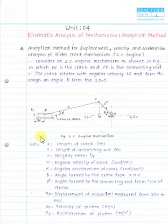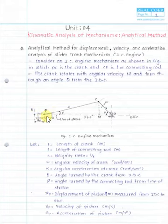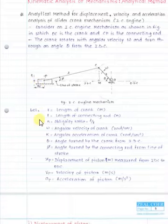Since O is a fixed link it will not have any motion. OC is the input link, so the input parameter is known from the input data. CP will have angular velocity, angular displacement, and angular acceleration. The piston will have linear displacement, linear velocity, and linear acceleration. We have to find out the relation for the displacement of the piston, from which we can easily find out the velocity and acceleration.